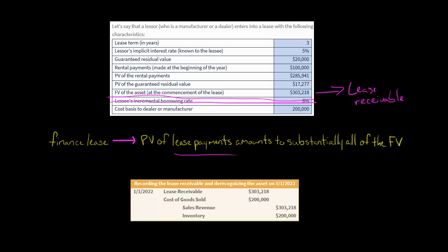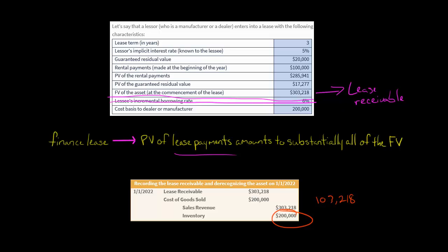We're going to have sales revenue of $303,218 on the company's income statement, and $200,000 of cost of goods sold, giving a selling profit of $103,218. They also need to remove the inventory from their statement of financial position and record the lease receivable. This wouldn't happen with an operating lease — what's happening is the equipment being leased was in the lessor's inventory, and now we take it off the statement of financial position.